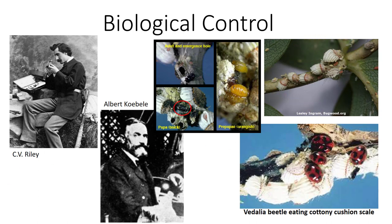In 1887, C.V. Riley, the chief of the Division of Entomology for the USDA, convinced the Florida Fruit Growers Convention to pressure the U.S. Congress to provide $2,000 for the covert collection of natural enemies in Australia. He sent Albert Koebele to Australia, who returned with fly parasitoids and the Vedalia beetles. The Vedalia beetles ate their way through infestations of cottony cushion scale, and the citrus industry was saved, making biological control popular.